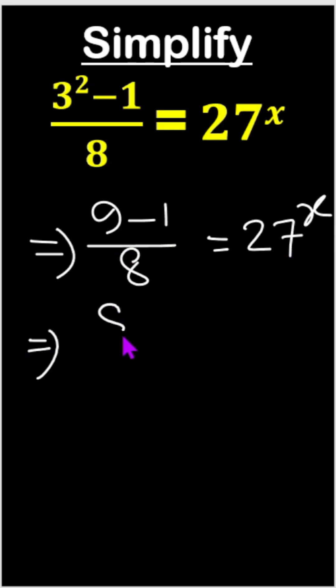This is simple. 9 - 1 is 8, so 8 divided by 8 equals 27^x. 8 divided by 8 is 1, so we can write 1 = 27^x.